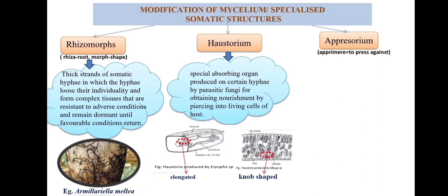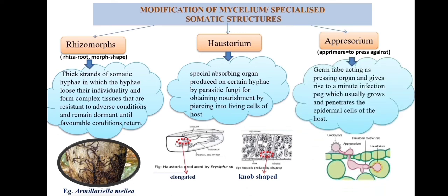The next specialized structure is appressorium. It comes from the word 'appremere', meaning to press against. Appressorium acts as a pressing organ, just like a balloon — inside the appressorium, high pressure is created due to chemicals like melanin. This increases the osmotic pressure inside the appressorium, which helps the pathogen penetrate the infection peg more deeply into the host cell. An example of a fungus producing appressorium is Puccinia species, a rust fungus.